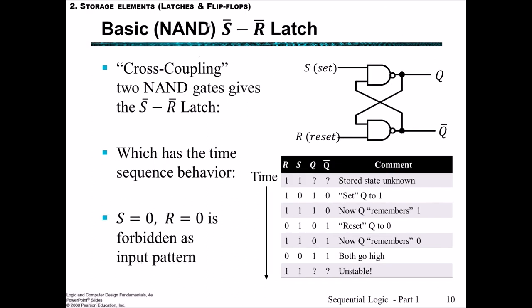Here's a NAND SR latch, often denoted with complement symbols above the S and the R. These cross-coupled NAND gates — different to the last one where we had two NOR gates, now we have two NAND gates — but once again they're cross-coupled. For this NAND SR latch, you'll notice from the table that it's very similar to the NOR SR latch, except wherever we had zeros before, now we have ones.